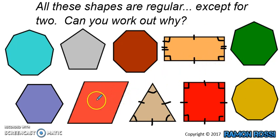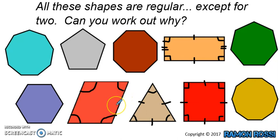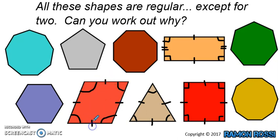The rhombus is the other irregular shape because the angles are different. This angle here is bigger than an L-shape, so it's obtuse, but this angle here is smaller than an L-shape — it's acute. The angles on the inside are not all the same. Even though the sides are all the same length, because the angles are different, it's still irregular.